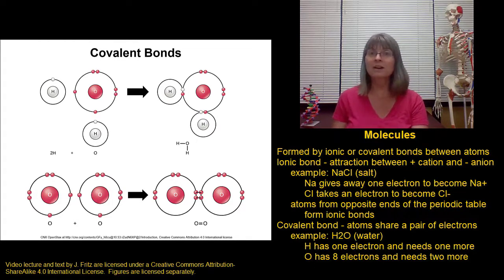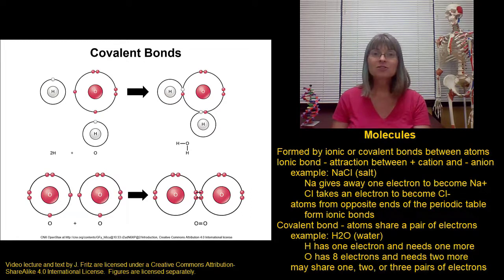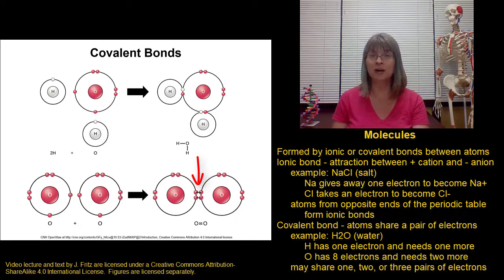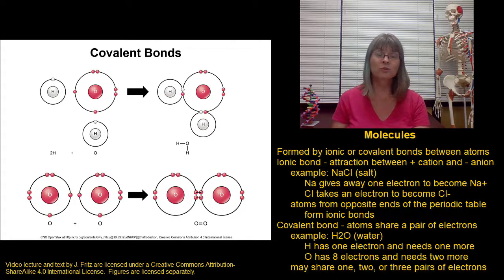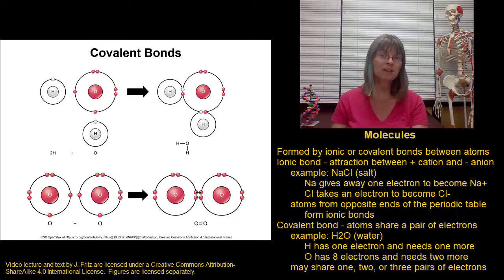Some atoms need to share more than one pair of electrons in order to become stable. One atom of oxygen has six electrons in its second shell and needs two more. If two atoms of oxygen bond together, each atom could share two electrons, and that would make it happy. When two atoms share two pairs of electrons, we call that a double bond. In a structural formula, this is written by drawing two lines between the atom symbols. In rare cases we can even see triple bonds where two atoms share three pairs of electrons — as seen when two nitrogen atoms bond together, and occasionally between carbon atoms as well.